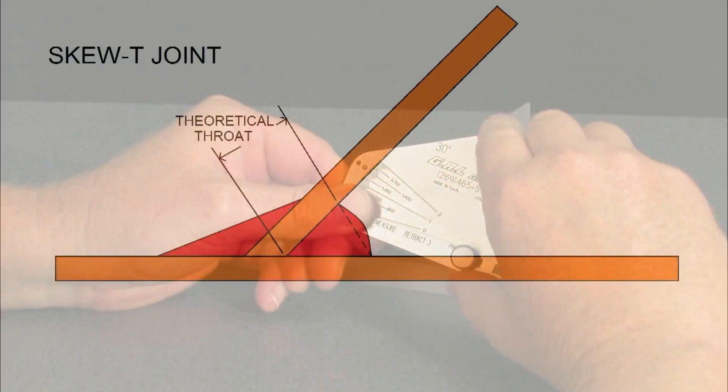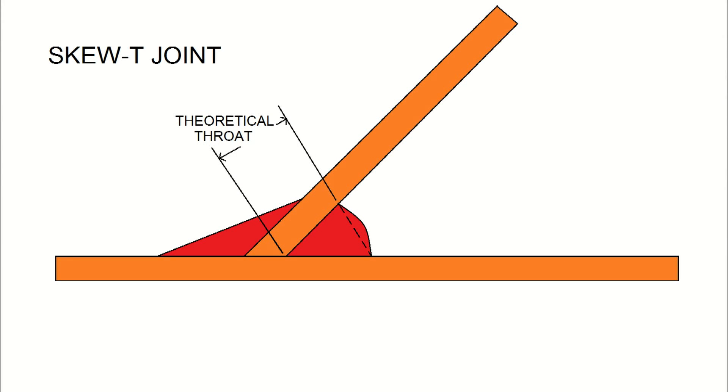If the theoretical throat size is given, the dihedral angle must also be specified, or it can be measured using the SKEW-T fillet weld gauge.